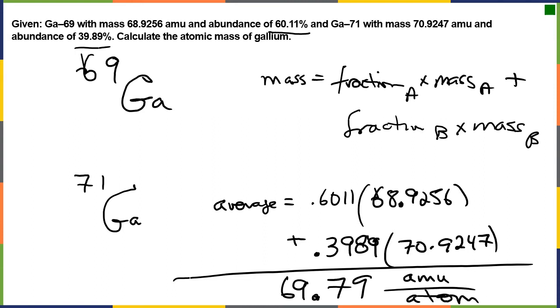That is the average mass of gallium taking into account how much you actually have in terms of abundance. Note it's a little closer to gallium-69 because there's more of gallium-69. And that is going to be the number we find on the periodic table. And that's going to be the one that we're going to use for our calculations.